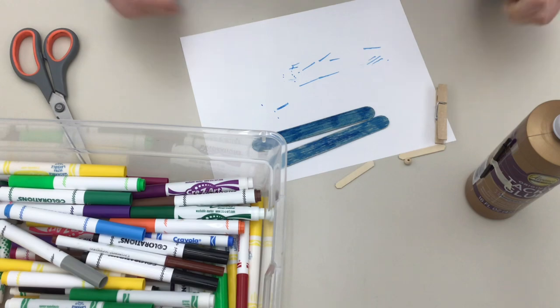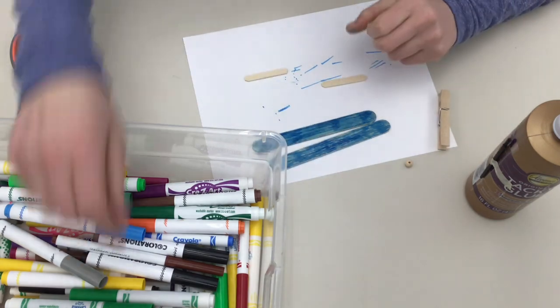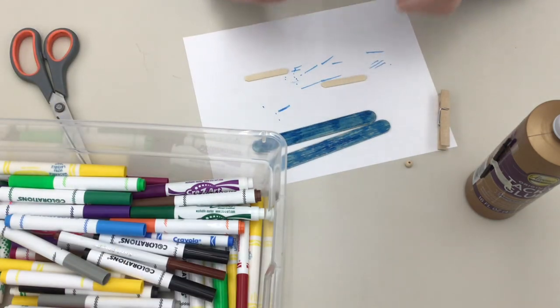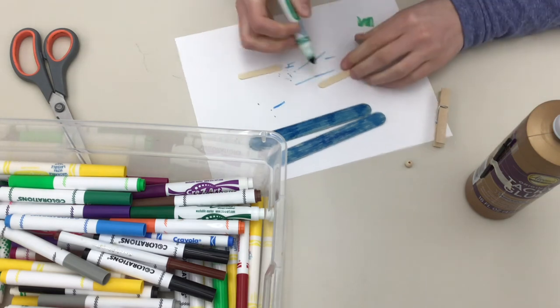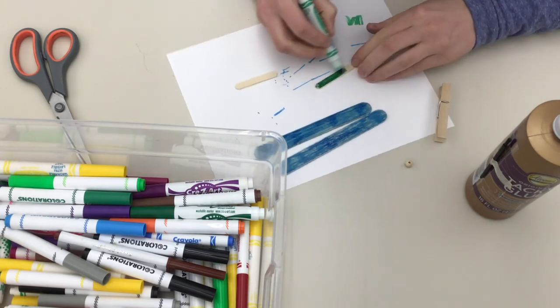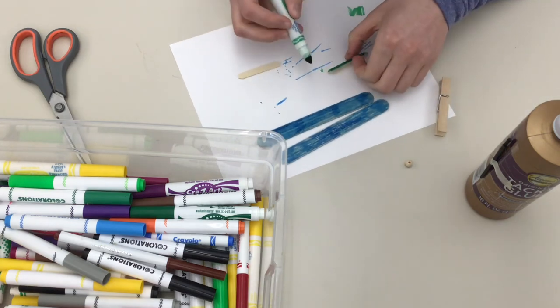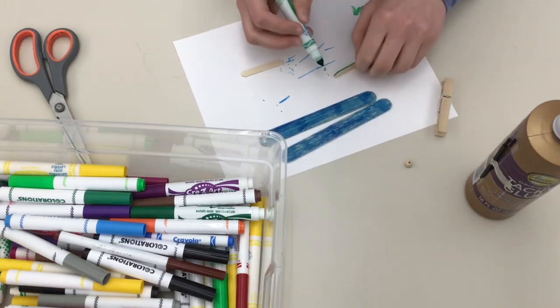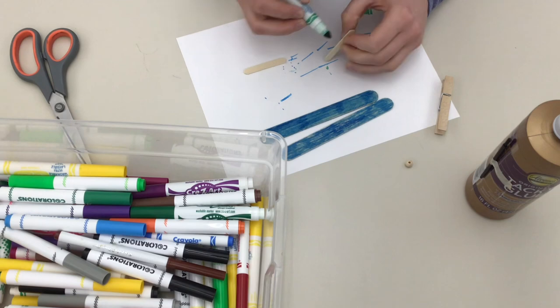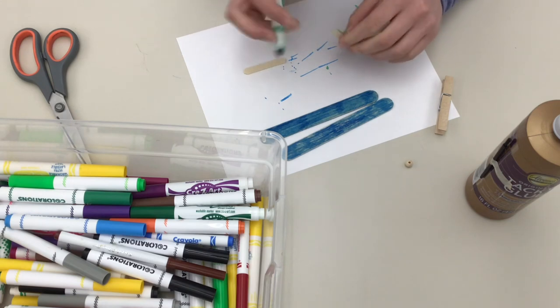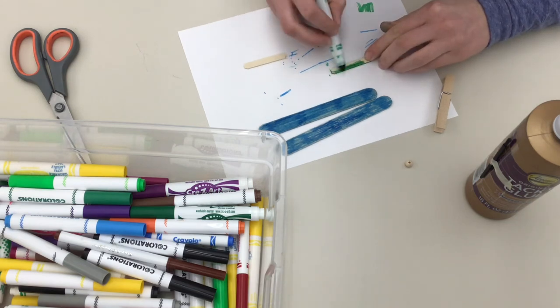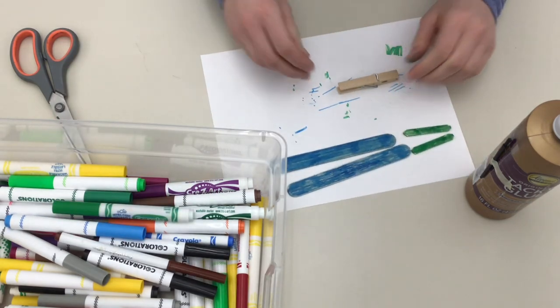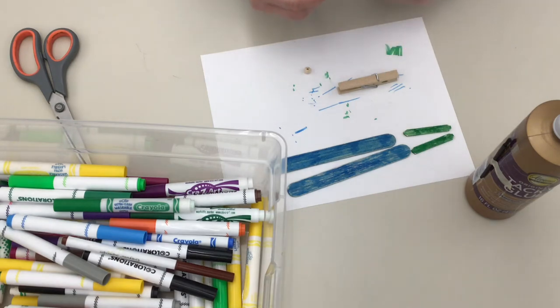Now I'm going to color the tail fin and the propeller, and I think I'm going to do both of those green. And just for fun, I'm going to do the knob of the propeller and the body of the plane red.